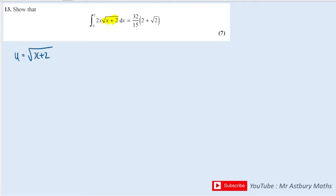Whenever I have a substitution which involves a square root, my top tip is to square both sides of that substitution. So u squared equals x plus 2, and then differentiate implicitly.